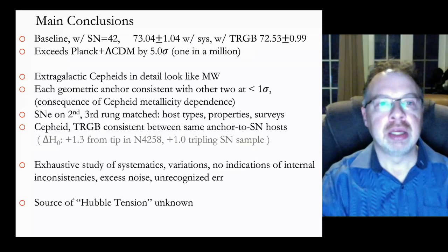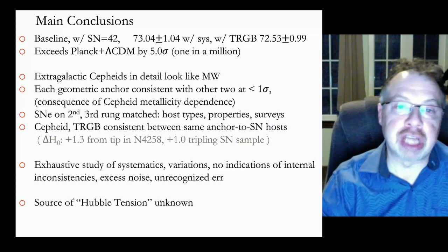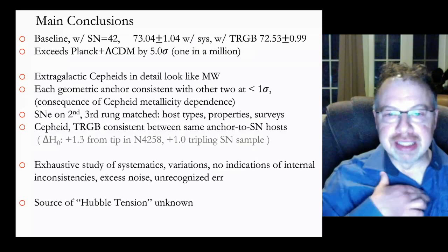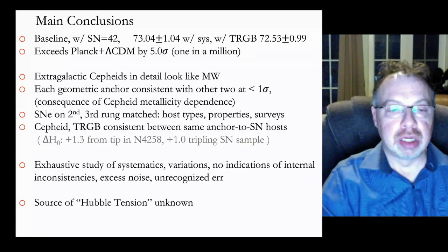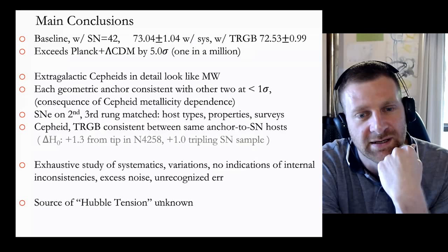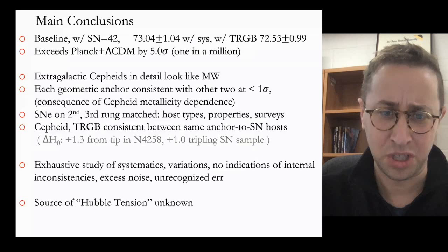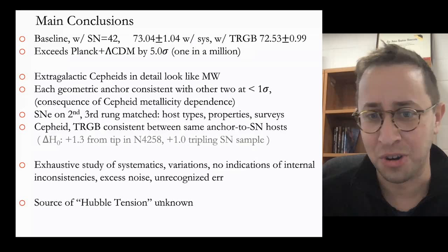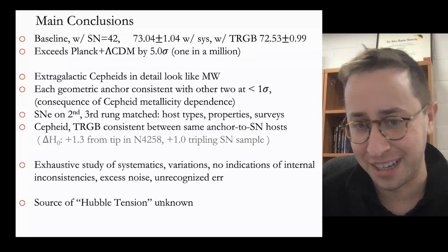Extra conclusions: the extragalactic Cepheids, when we look in real detail, look like Milky Way Cepheids. The geometric anchors appear consistent. We've done a lot of work matching supernovae between rungs two and three — the types of galaxies, their properties, and the surveys. We see consistency between Cepheid and tip of the red giant branch measurements between the same anchor and supernova hosts. We've done this exhaustive study of systematics and variations — we don't see any indications of internal inconsistencies, and we don't know what is causing this tension.